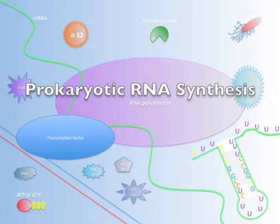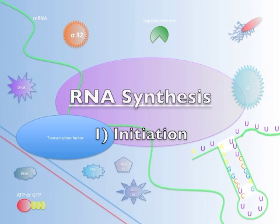Prokaryotic RNA synthesis, also called transcription, takes place within the cytoplasm of the cell. It requires a template strand of DNA with which to create an RNA copy. There are three stages of RNA synthesis.